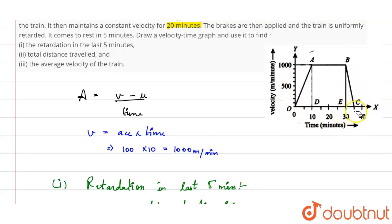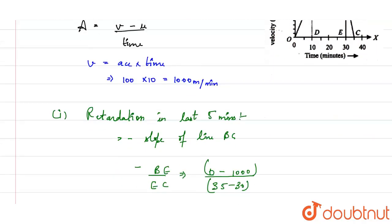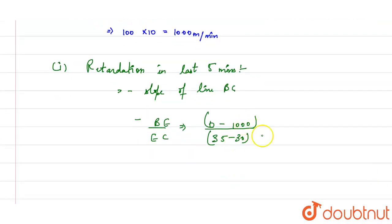Now, this is going to be minus 1000 divided by 5 equals minus 200 meter per minute squared.